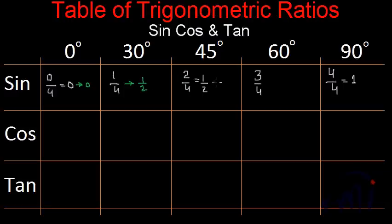If I take square root of 1 by 2, I'll get 1 by root 2. And if I take square root of 3 by 4, I'll get root 3 in the numerator and 2 in the denominator. And square root of 1 is 1. These values written in green are actually the values of sine.